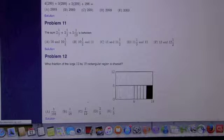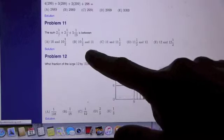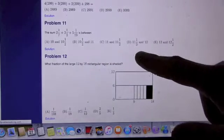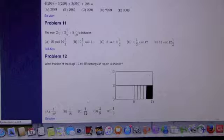Problem 11. The sum 2 1/7 plus 3 1/2 plus 5 1/19 is between what two numbers? 10 and 10 1/2, 10 1/2 and 11, 11 1/2 and 12, 12 and 12 1/2.